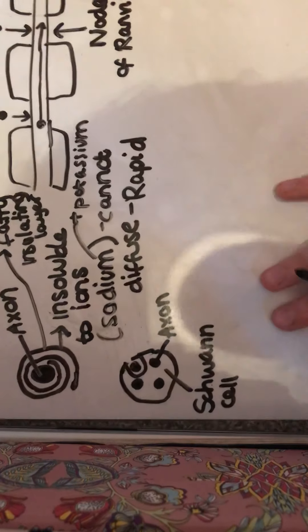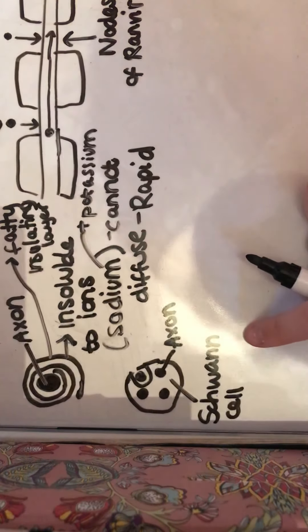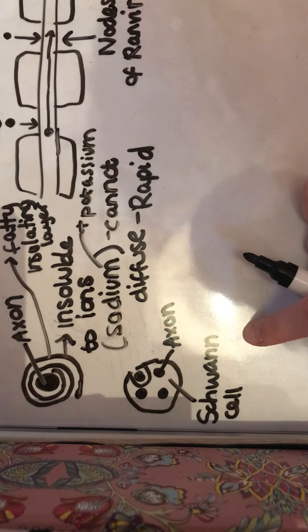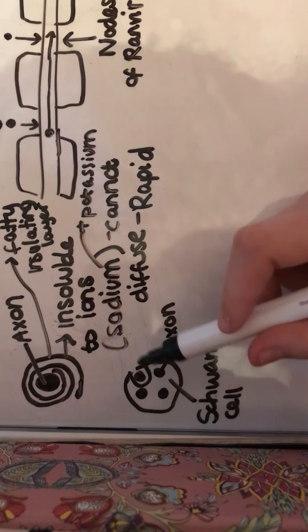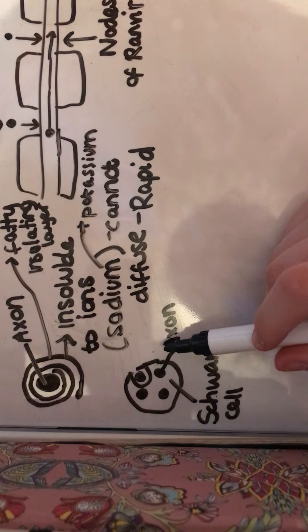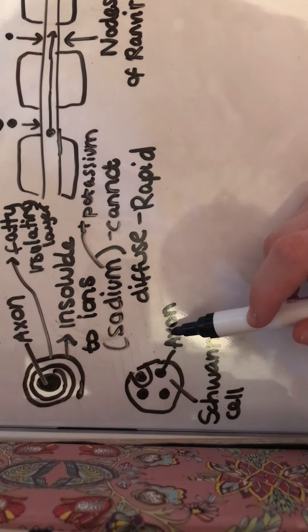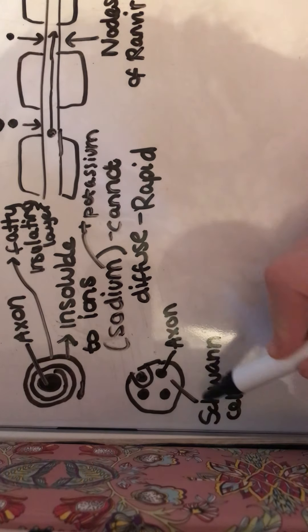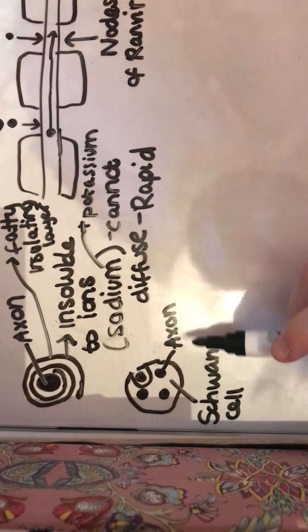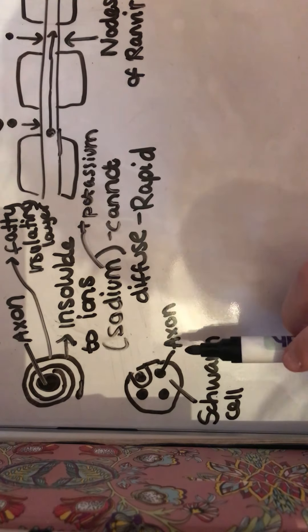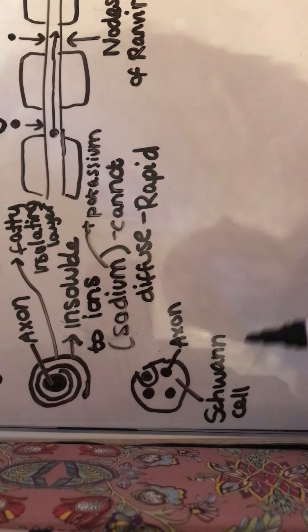Our non-myelinated neurons here—we can actually have several neurons that are enshrouded in a loosely wrapped Schwann cell, which we can see there. So these are all individual neurons.